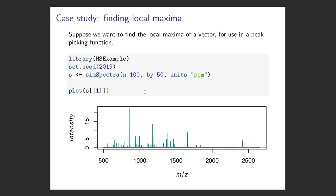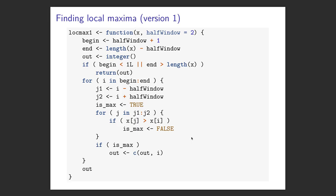Suppose we want to find the local maxima of a vector, which we could use for peak detection. Our goal is to create a function that finds the local maxima of a vector — something we might want to do hundreds, thousands, or even millions of times if we're processing hundreds of thousands of spectra. So we want that little helper function to be really, really fast. I'll start off with this initial version one might conceivably write first.